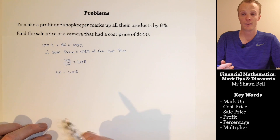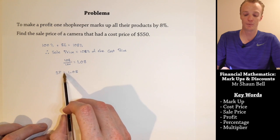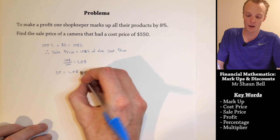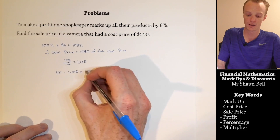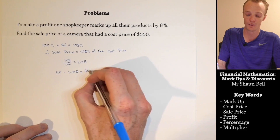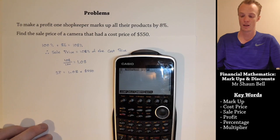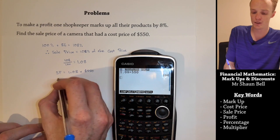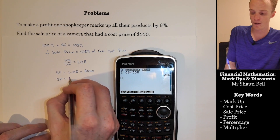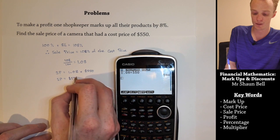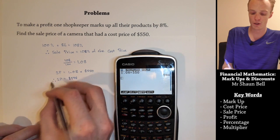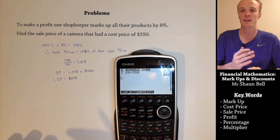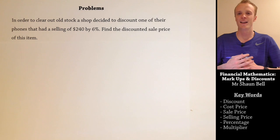Now that we have the multiplier, to find the sale price, we simply need to take this multiplier and multiply it by the cost price of $550. To do this with my calculator, I put the multiplier in and times it by $550, and I find that the new sale price will be $594. Do make sure that you put the therefore symbol to indicate that that is your final solution.